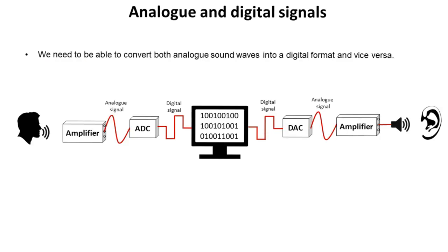We obviously need to be able to convert both analogue sound waves — for example an artist in a recording studio — into a digital format, and obviously vice versa. We need that digital recording being played by an MP3 player to be converted so our ears can process the analogue signal.